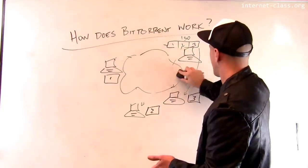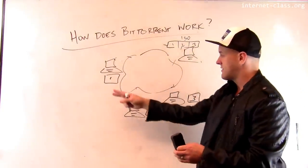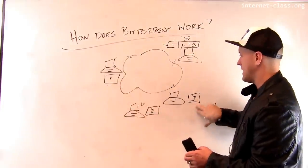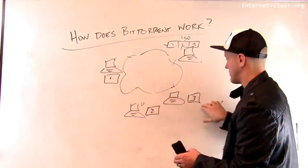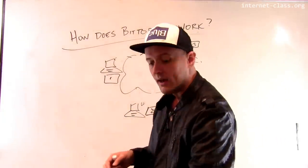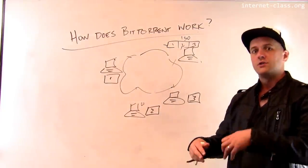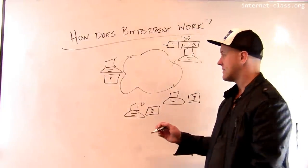Now, you might think, well, what do I have to do in order for these guys to finish the file? Well, this guy needs piece two and three. This guy needs piece one and three. And this guy needs piece one and two. And so what BitTorrent does is it allows these three computers to cooperate to swap the pieces that they need.